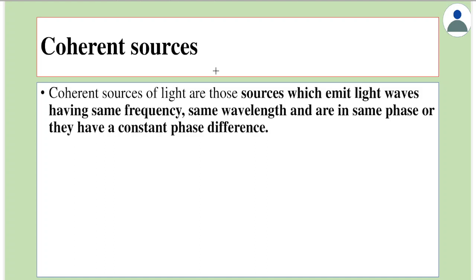Hello everyone, let's study about coherent sources. Coherent sources of light are those sources which emit light waves of same frequency, same wavelength, and are in same phase or they have a constant phase difference.